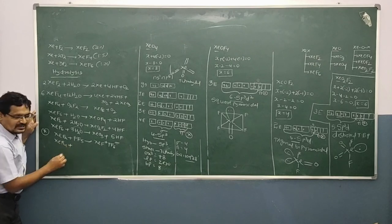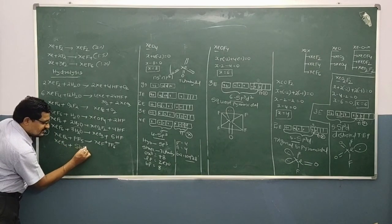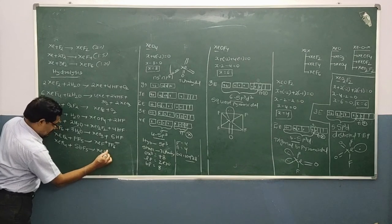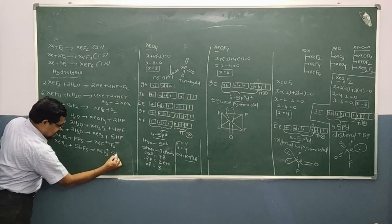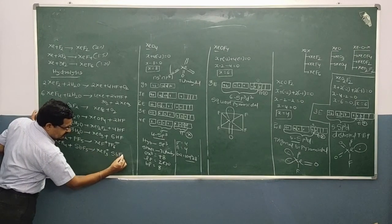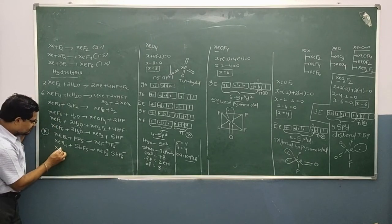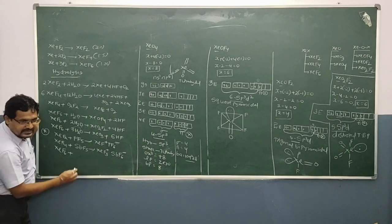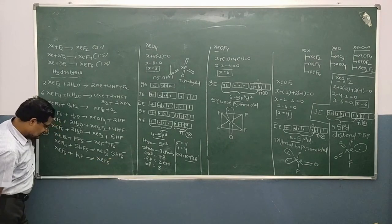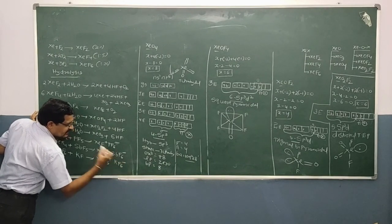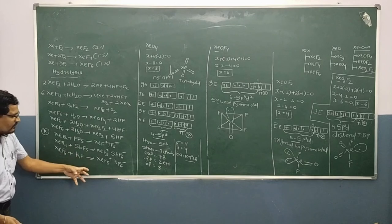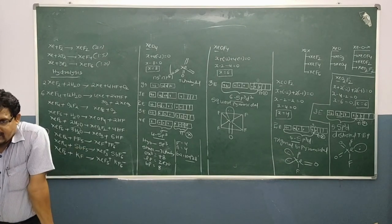Xenon tetrafluoride reacts with SbF5. How many? 9. Out of 9, 3 is there. Then SbF6 minus. Xenon hexafluoride reacts with KF to get XeF5 plus and KF6 minus. Xenon difluoride, tetrafluoride, and hexafluoride react with pentafluoride compounds to form cationic and anionic species.